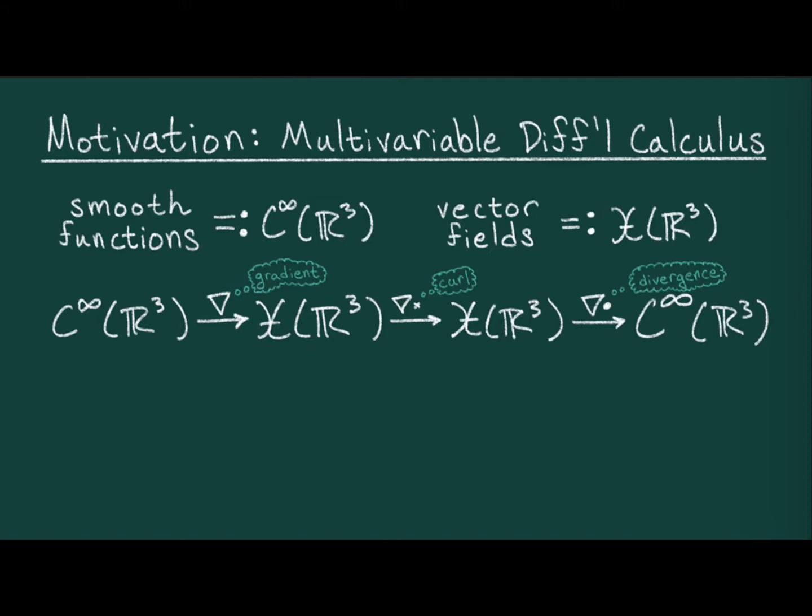These operators satisfy two fundamental identities. The first is that the curl of the gradient of a function is zero. Morally, this is like saying that steepest ascent doesn't spin you around. In other words, the gradient composed with the curl is zero.